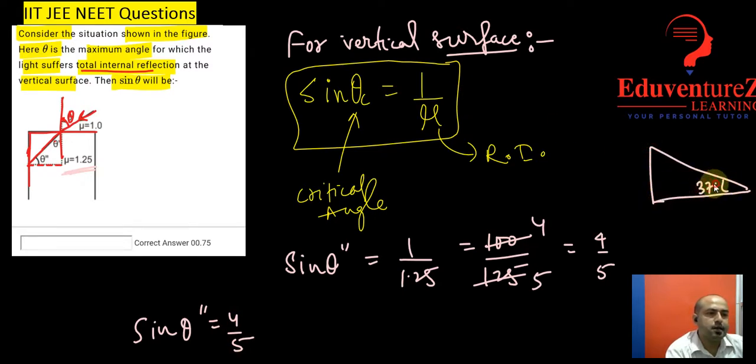if this is 37, this is 90, this is 53, then this is 3, 4 and 5. So if sine theta double dash is 4 upon 5, then this is the perpendicular and this is the hypotenuse. So we will write theta double dash as 53 degree.